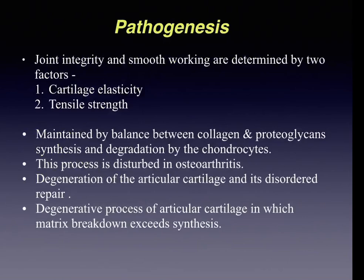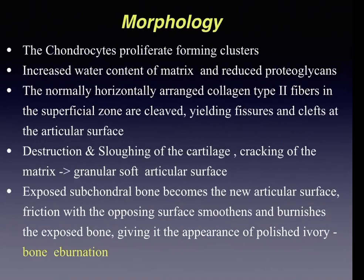In the initial stages of osteoarthritis morphology, chondrocytes proliferate forming clusters, with increased water content of the matrix, reduced proteoglycans, and alteration in arrangement of type 2 collagen fibers — normally horizontally arranged fibers show cleavage yielding fissures and clefts at the articular surface. Later, destruction of articular cartilage gives rise to a granular soft articular surface, exposing the subchondral bone. Continued friction smoothens this surface, producing a polished ivory appearance called bone eburnation.